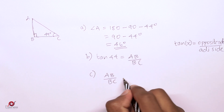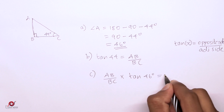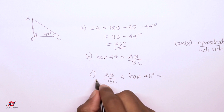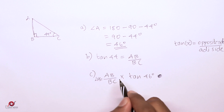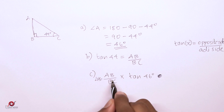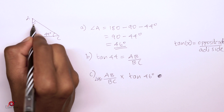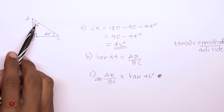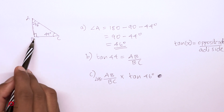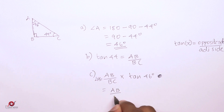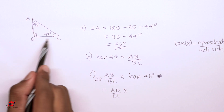Now for question C: prove that tan 44 into tan 46 is equal to 1. We take the LHS, which is tan 44 into tan 46. We substitute tan 44 as AB by BC. For tan 46, the opposite side is BC and the adjacent side is AB, so tan 46 equals BC by AB.